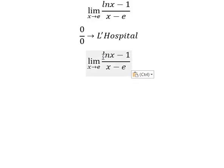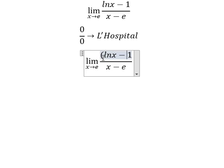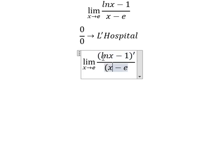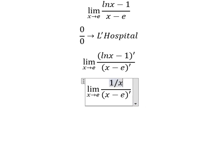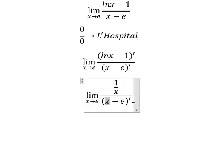We take the derivative of the numerator and the denominator. For the numerator we have 1/x. The constant term gives us zero. For the denominator we have 1.